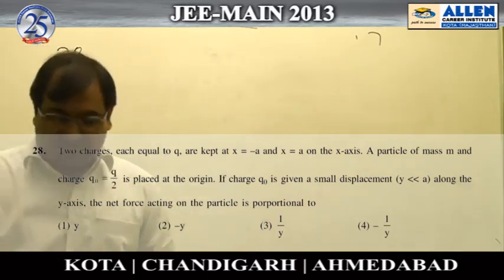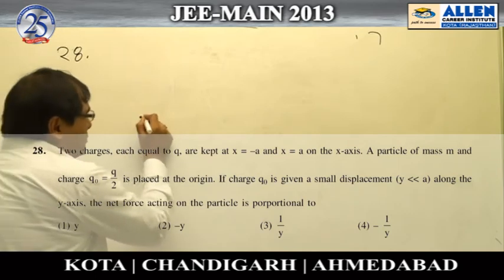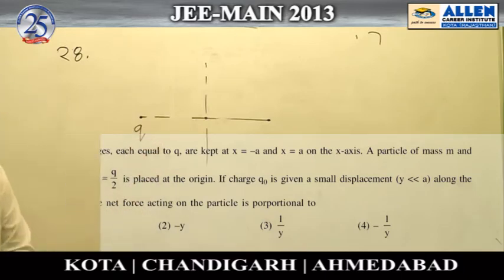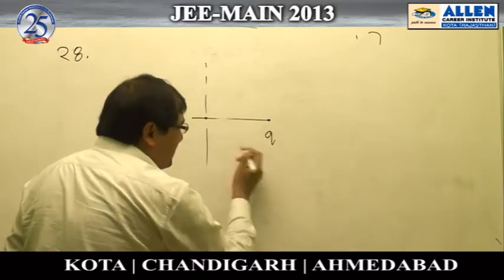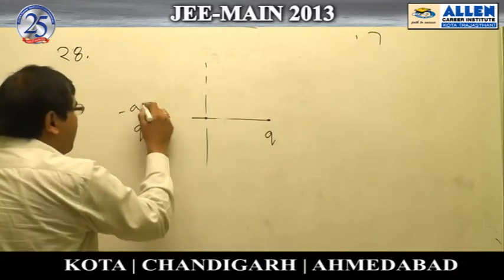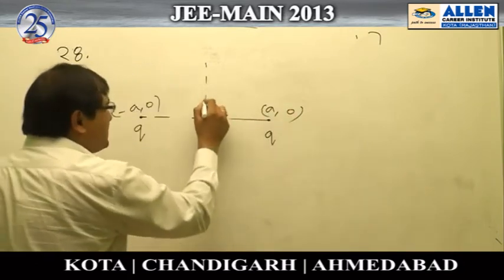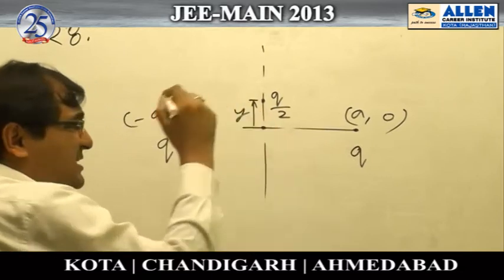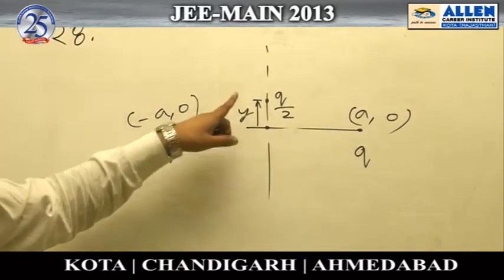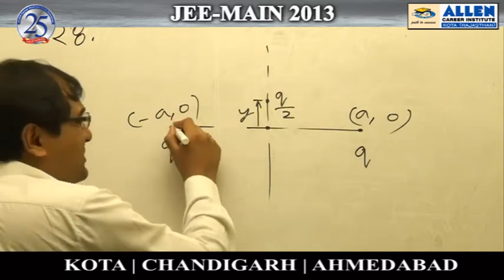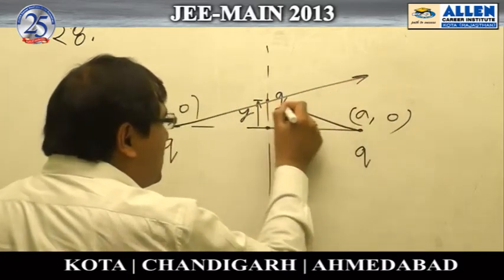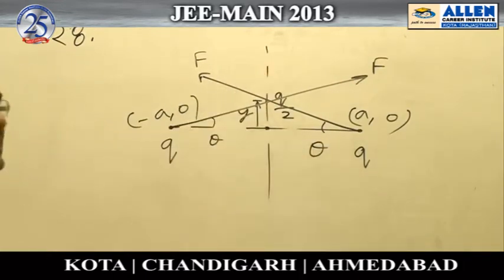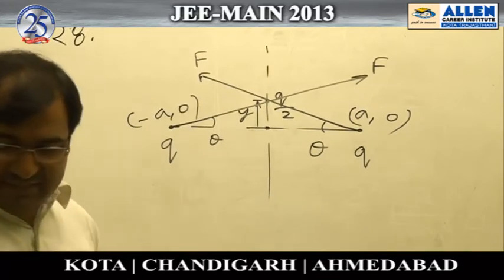Question 28: We have two charges placed symmetrically about the origin on the x-axis — charge Q at minus A and another charge Q at plus A — and there is another charge Q/2 kept at the origin, displaced by a small amount Y as shown. Writing the forces acting on it: there is a force F acting in one direction and another force F acting symmetrically, and we need the vector sum of these two forces.